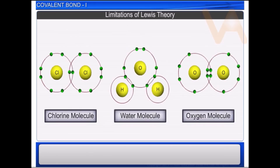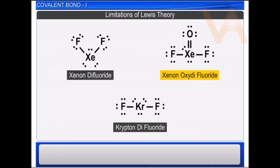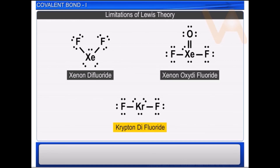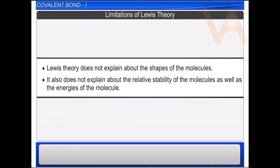Some elements like krypton and xenon form compounds in spite of having octet in the valence shell, such as xenon difluoride, xenon oxydifluoride, and krypton difluoride. The octet rule cannot explain this anomaly. Lewis theory also does not explain the shapes of molecules, the relative stability of molecules, or the energies of molecules.